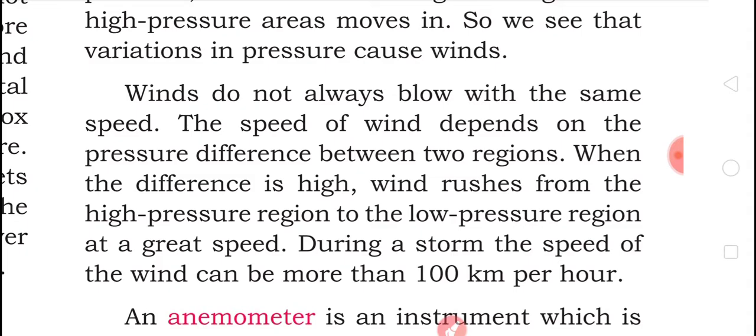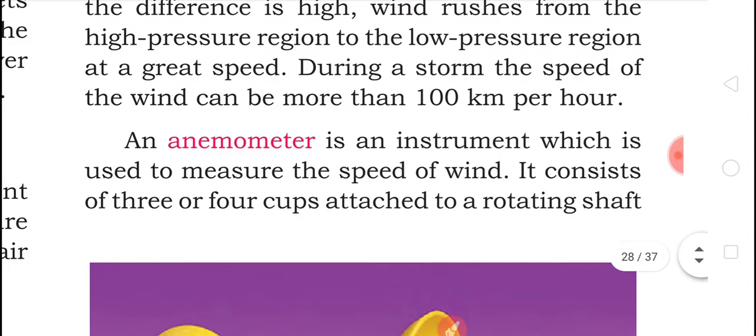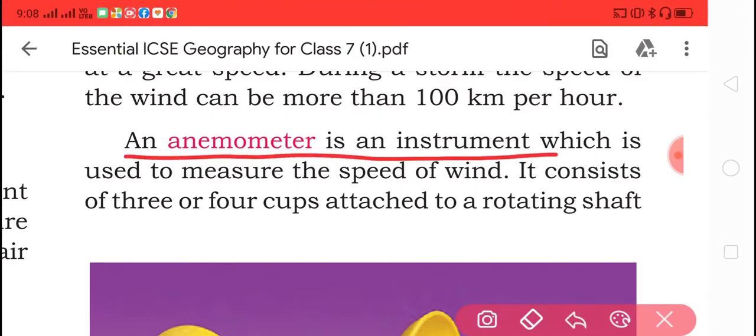During a storm, the speed of wind can be more than 100 kilometers per hour. An anemometer is an instrument which is used to measure the speed of wind.